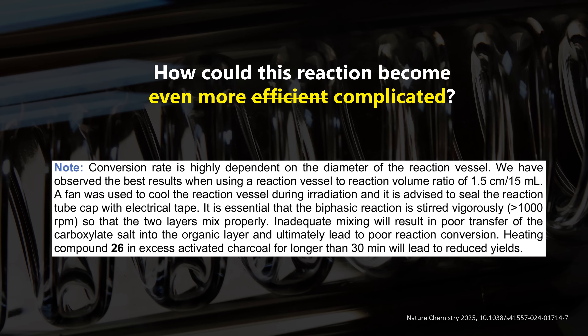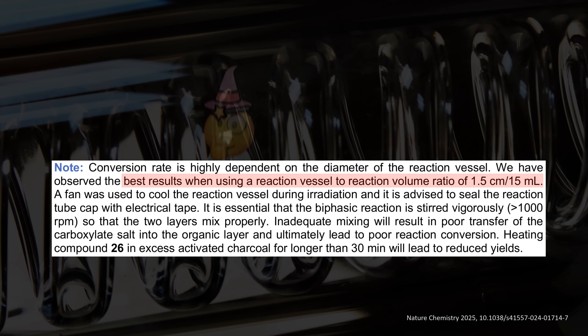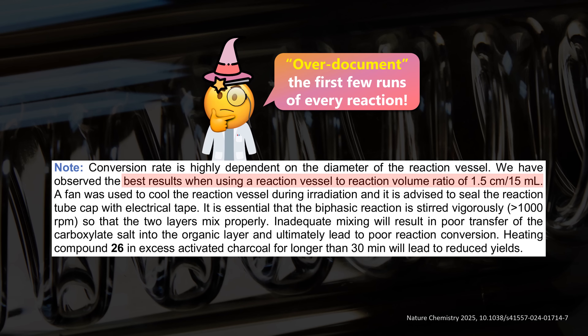It turned out that reaction tubes with just the right diameter-to-volume ratio worked much better than others. This is an important lesson: your lab documentation should be top-notch. If you scale up or simply try to repeat such exotic reactions, you can easily run into a scenario where a reaction 'stops working.' If you've experienced this yourself in the lab, share your story in the comments.